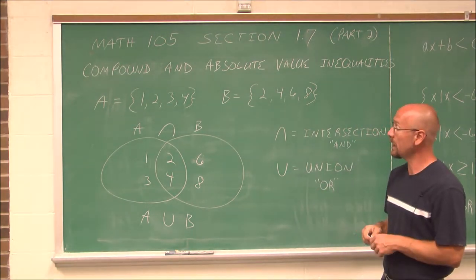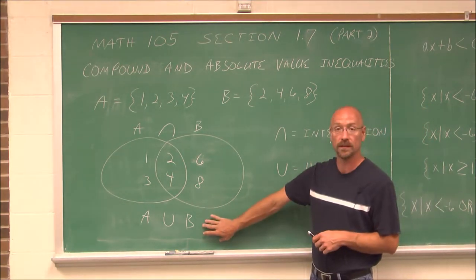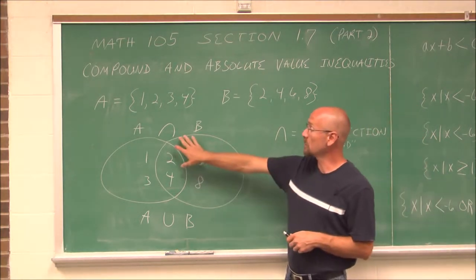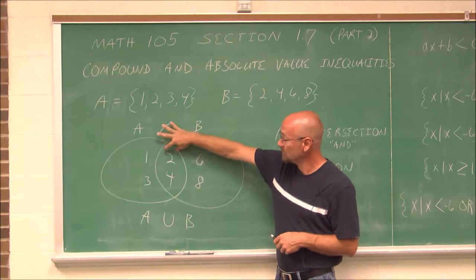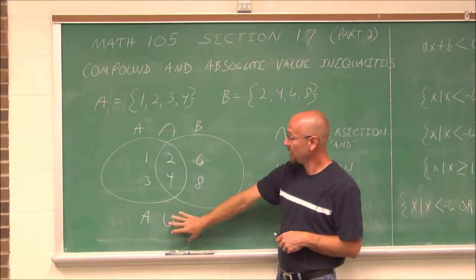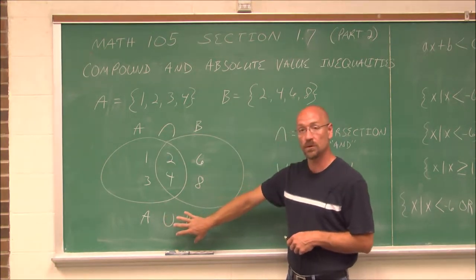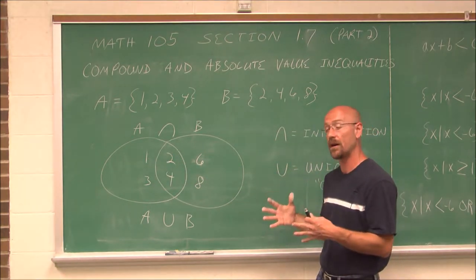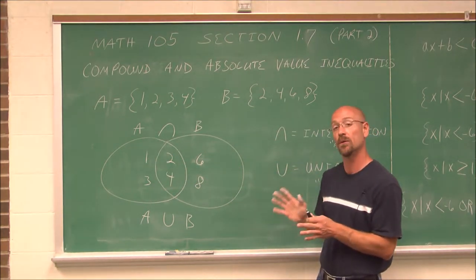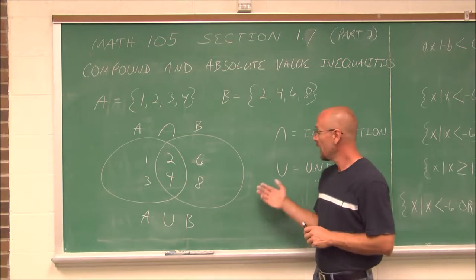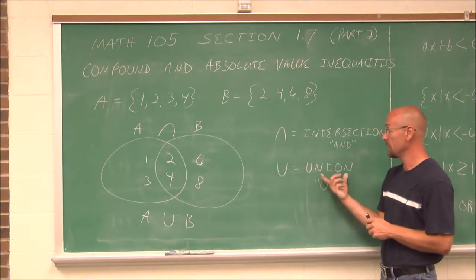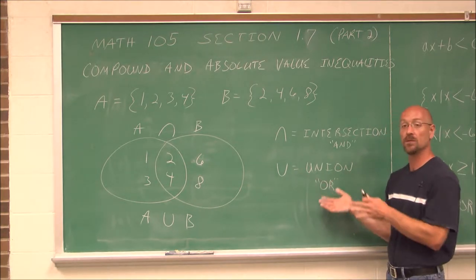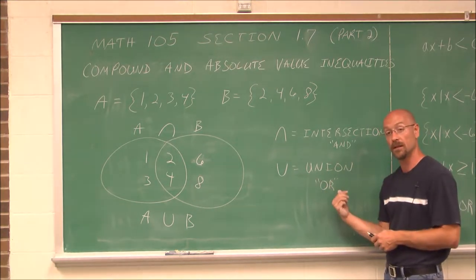We're going to look at the union of two sets. In the previous section, we looked at intersections, which is where they overlap. Now we're going to look at the union of two sets — what's in this set or this set, essentially all the values that can be found in one or the other. That's why when we use this symbol for union, we interchange it with an OR statement. A union means what's in one or the other.